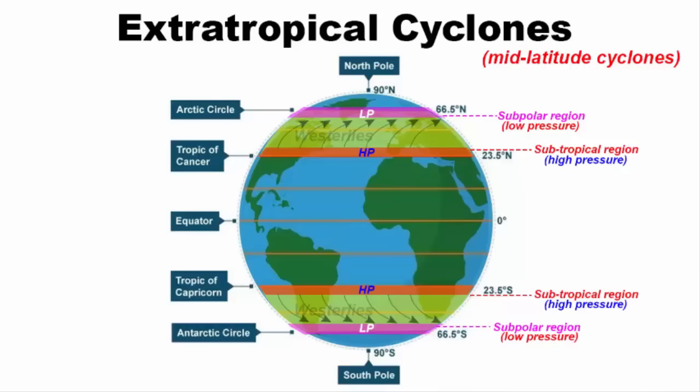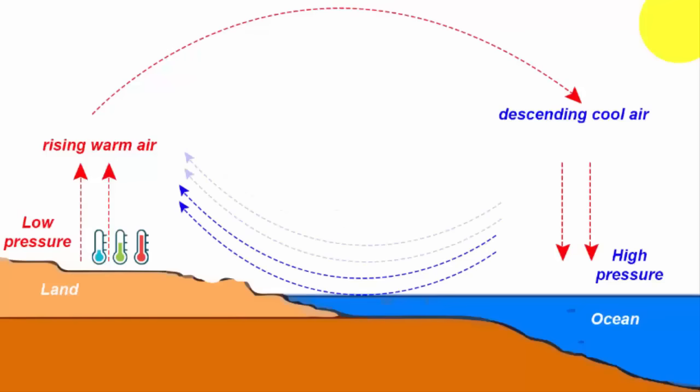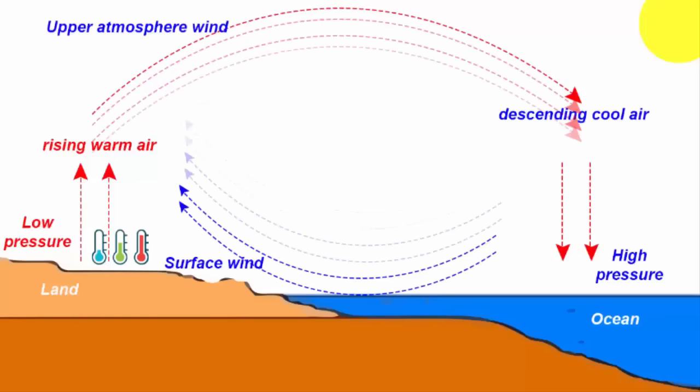Now we will see how the Extratropical Cyclones are formed. Try to understand this. Wind circulation is the main reason that creates any kind of cyclone. And depending on temperature, winds propagate between the surface and the upper atmosphere. And always remember, upper atmosphere winds are faster than surface winds.